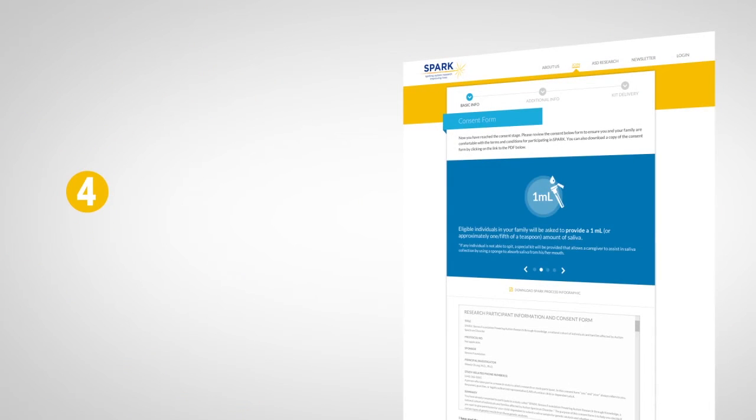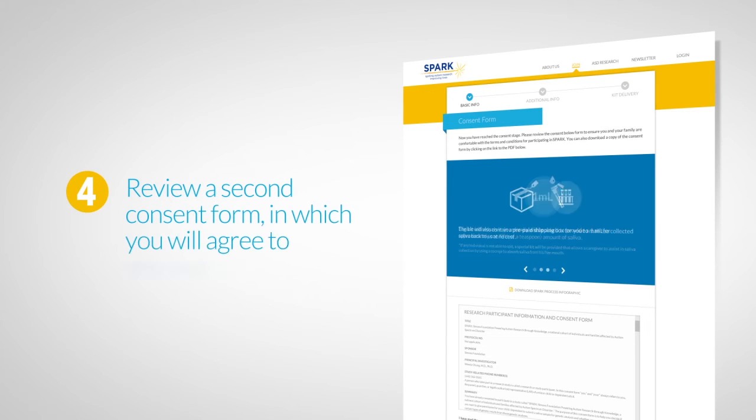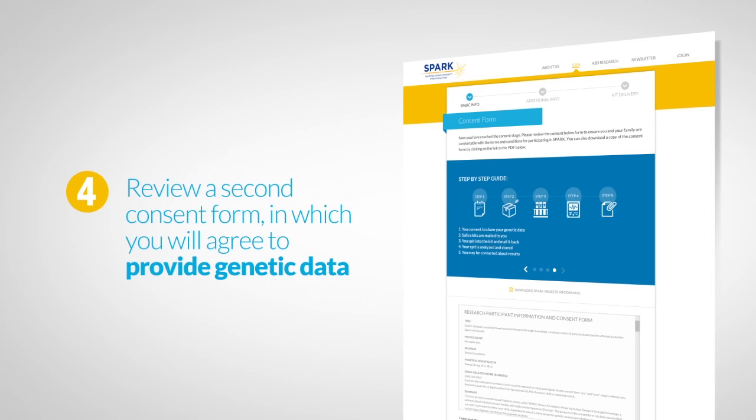In the fourth and final step, you'll be asked to review a second consent form. On that form, you'll have the option of providing your genetic data. SPARC will collect DNA from saliva. The saliva will be collected from kits shipped to your home to make it easier for families and individuals on the autism spectrum to participate.